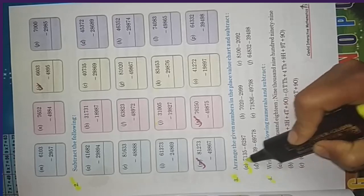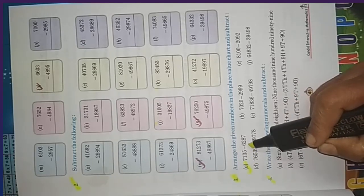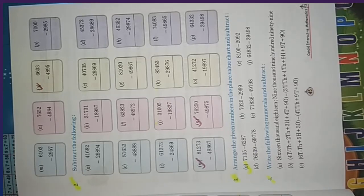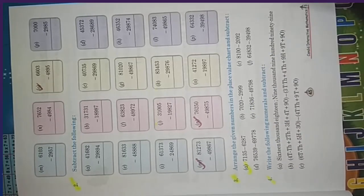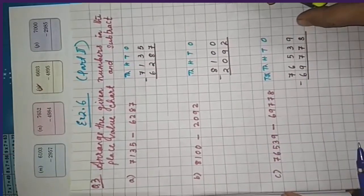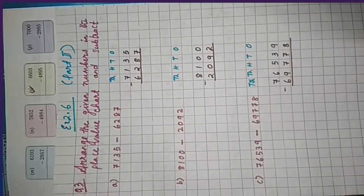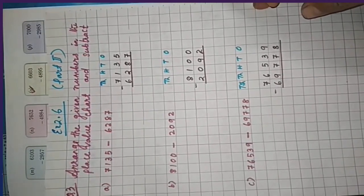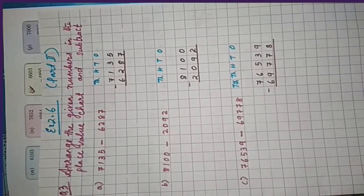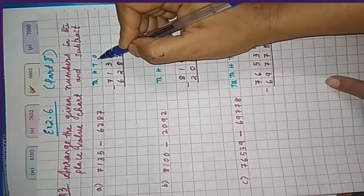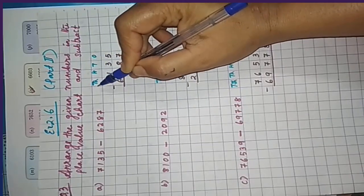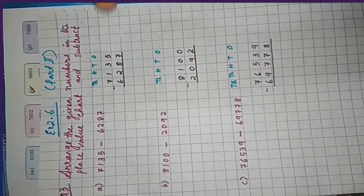The first question is 7135 minus 6287. Take out a copy and write: question number 3, arrange the given numbers in the place value chart and subtract. Write 7135 minus 6287, then draw the place value chart with ones, tens, hundreds, and thousands columns.